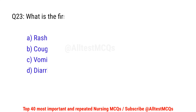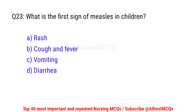Question No. 23: What is the first sign of measles in children? The correct option is B: Cough and fever.